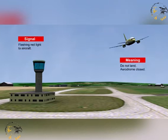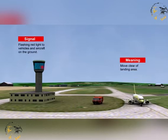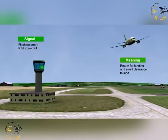A flashing red light from air traffic control to an aircraft in flight means that the pilot is not to land the aircraft as the aerodrome is closed. A flashing red light from air traffic control to an aircraft or vehicle on the ground means that the aircraft or vehicle is cleared to taxi or move to the manoeuvre area.